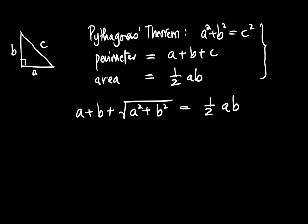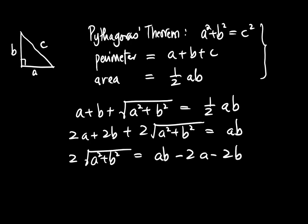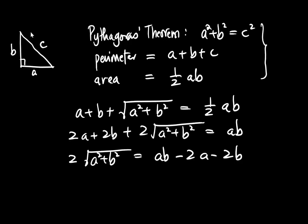Multiply both sides by 2 to eliminate the fraction. 2A plus 2B plus 2 times the square root of A squared plus B squared equals AB. Rearranging, 2 times the square root of A squared plus B squared equals AB minus 2A minus 2B.